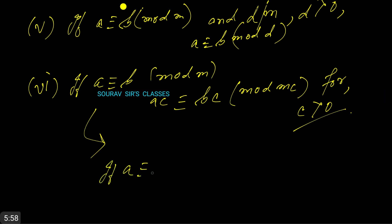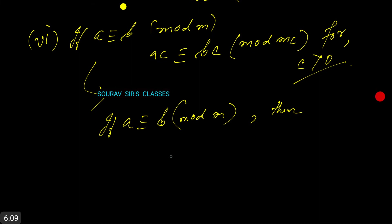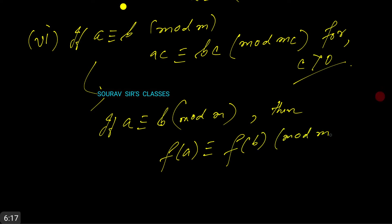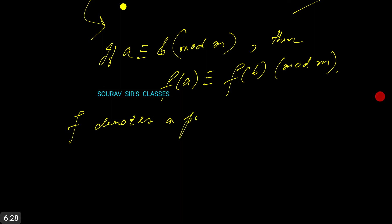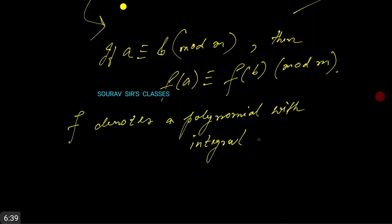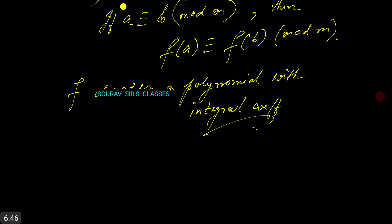If a ≡ b (mod m), then f(a) ≡ f(b) (mod m), where f denotes a polynomial with integral coefficients. Let us now do some problems.